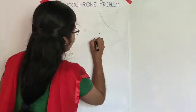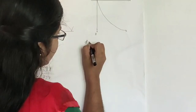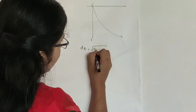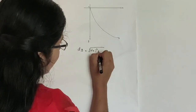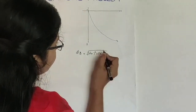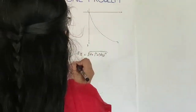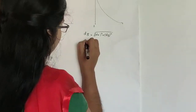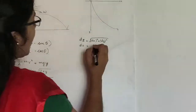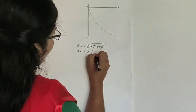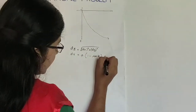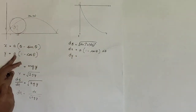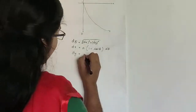ds is given by the formula: ds equals root of (dx² + dy²). From the parametric equations, dx equals a(1 minus cos θ) dθ and dy equals a sin θ dθ.